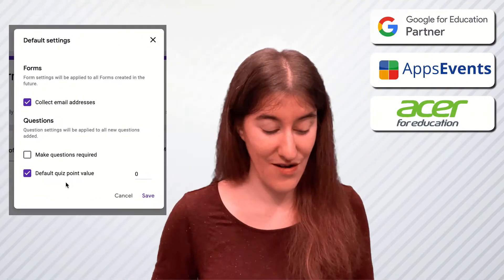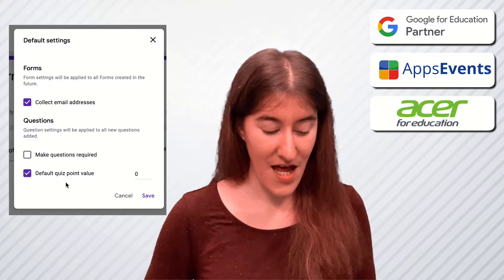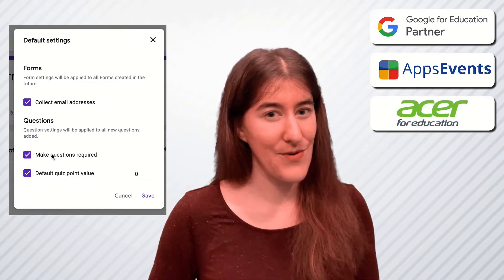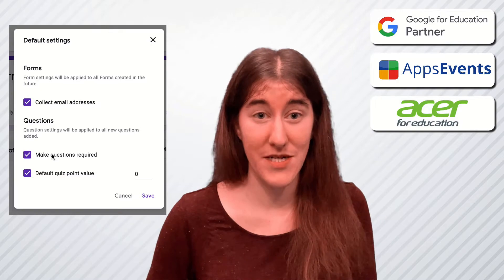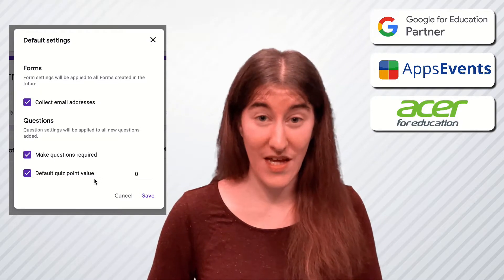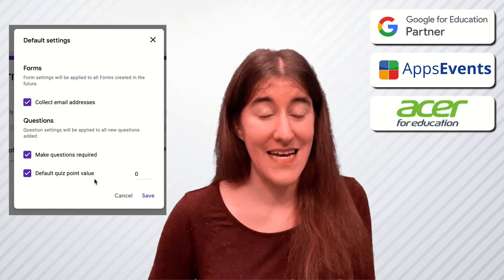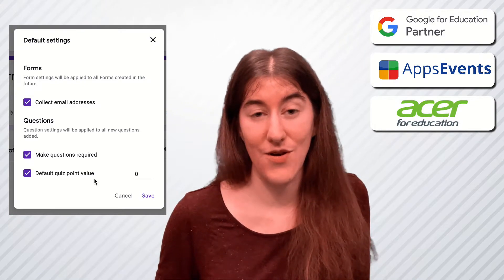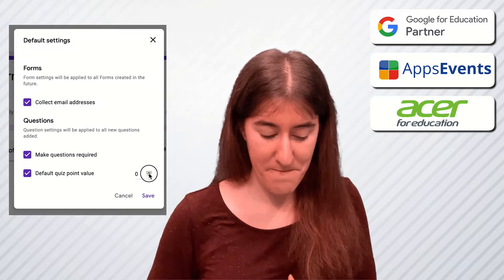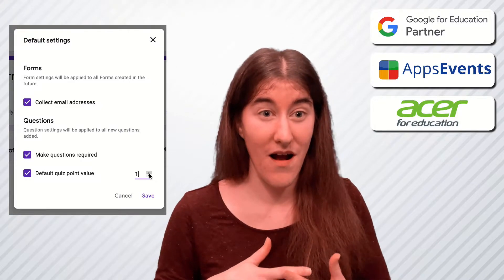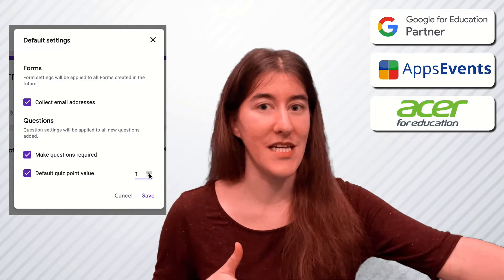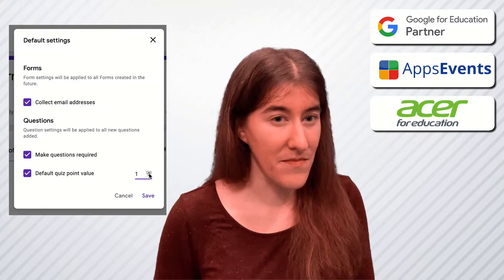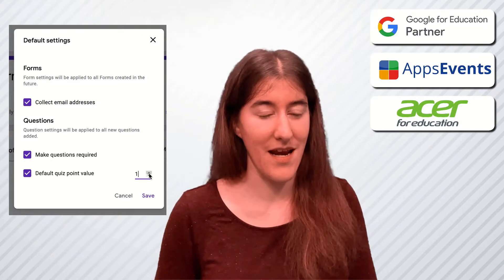While you are in your preferences, you can also change some defaults for your questions. You can make it so every question is automatically required — that saves you clicking that purple toggle at the bottom of every question. You can also change it so that in a quiz, every question has a default point value of 1, or 2, or however you want to rate your quizzes. So if you make this change here, any new quiz question will automatically have a value of 1 instead of 0, saving you that little bit of time from having to change it every single time you create a new question.